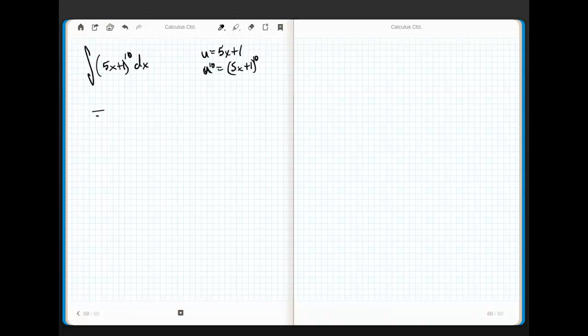Now, some of you may say, well, why can't I just say that this is equal to 5x plus 1 raised to the 11th divided by 11 plus c? Well, why doesn't that work? Well, it's easy to prove.